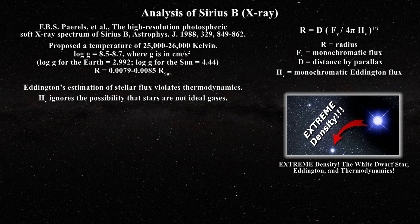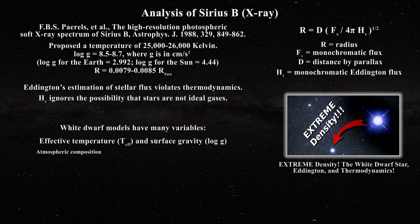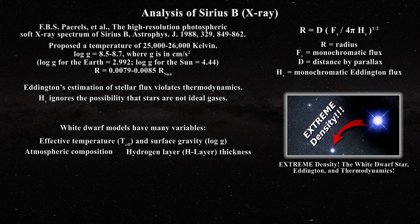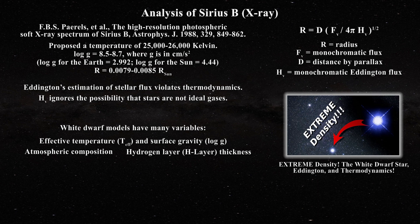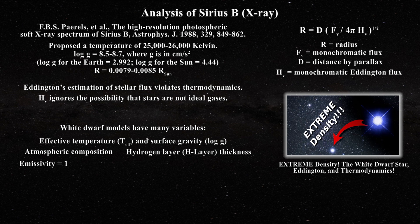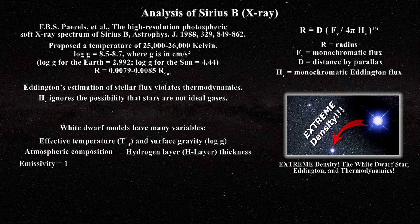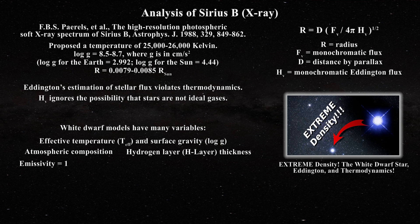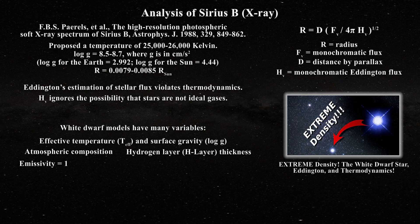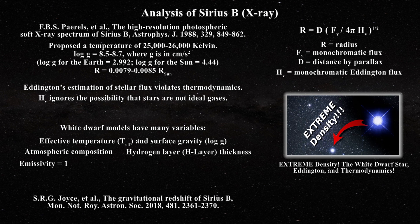Eddington flux is derived from models which have several variables including effective temperature, composition of the atmosphere, hydrogen layer or H layer thickness above the surface, and of course the assumption that emissivity is equal to 1. The composition of a DA white dwarf atmosphere is usually assumed to be essentially pure hydrogen. We will discuss why that is in question in our next videos. The H layer is perhaps the most unreasonable variable, with H layers that differ by six orders of magnitude, as can be seen in this paper.